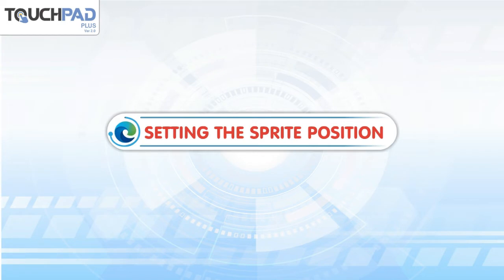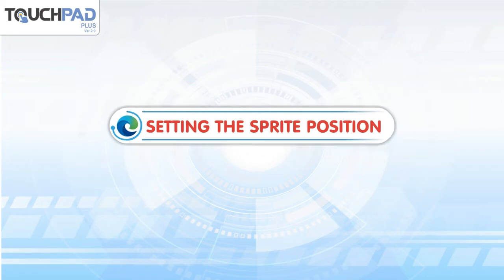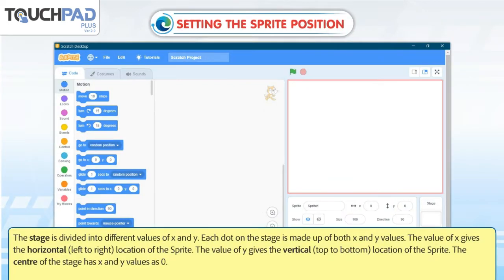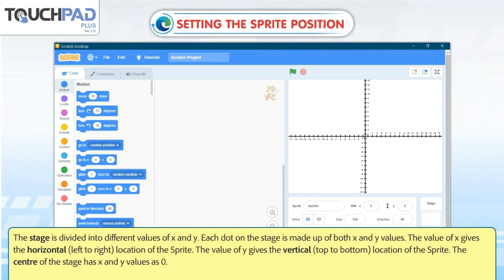Setting the sprite position: the stage is divided into different values of x and y. Each dot on the stage is made up of both x and y values. The value of x gives the horizontal, left-to-right location of the sprite. The value of y gives the vertical, top-to-bottom location of the sprite.